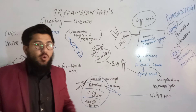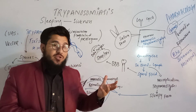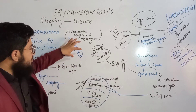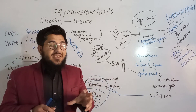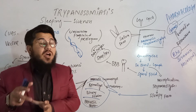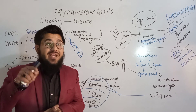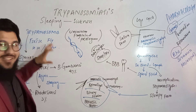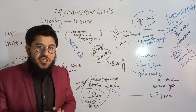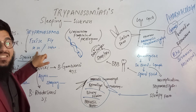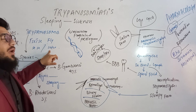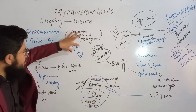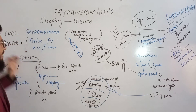What is the vector for trypanosoma? A vector is simply like a car or vehicle that is needed for this trypanosoma protozoa. This protozoa cannot move on its own from one place to another, so it needs some kind of vehicle — that vehicle in biology is named a vector. The vector, or car, used by this trypanosoma is named the tsetse fly.